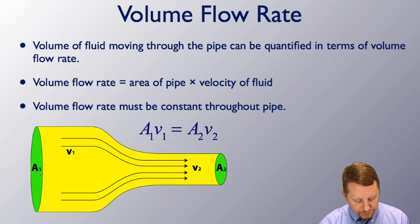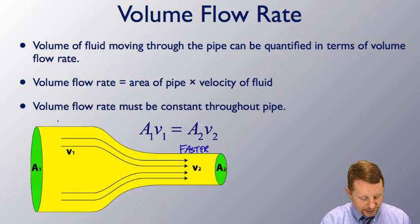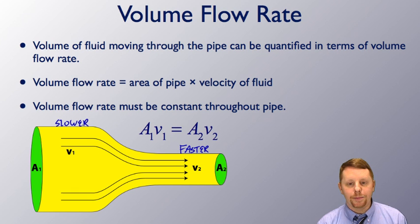So over here on the left of our pipe, we have some area A1 and some velocity v1 that must equal A2v2 over here on the right so that you maintain that constant volume flow rate. What that means then is because this is a larger area and this is a smaller area, if they must be equal, we must have faster flow over here where the pipe is narrower and slower flow over here where the pipe is wider.